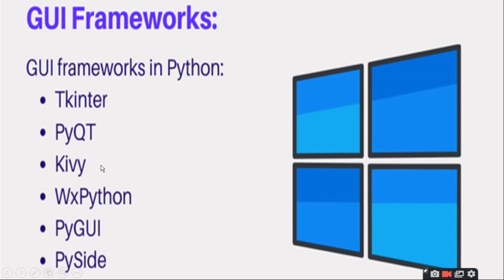First is the GUI Framework, which includes Tkinter, PyQt, Kivy, wxPython, PyGUI, and PySide. These are the tools in a framework which you use to make different GUI interfaces.